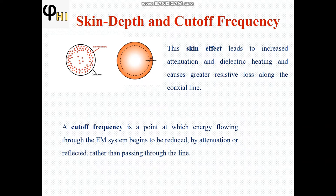Another limitation is the cutoff frequency, which is the point at which energy flowing through the electromagnetic system begins to be reduced by attenuation or reflected rather than passing through the line. If we are using a coaxial transmission line for propagation of the transverse electromagnetic mode there is no problem, but at higher frequencies when transverse electric and transverse magnetic modes are generated, they are reflected back. Because of these two reasons — skin depth and cutoff frequency — there is a limitation on the use of coaxial transmission lines at high frequencies.